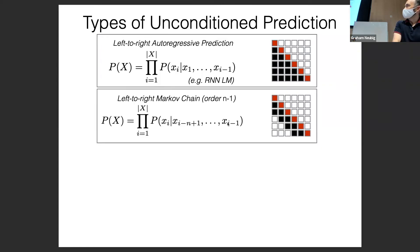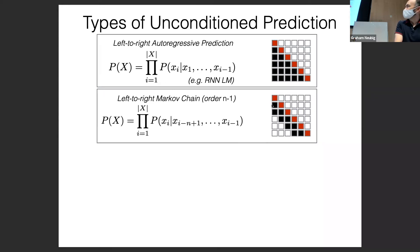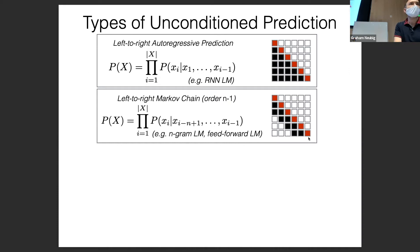Another type is a left-to-right Markov chain, where you condition on previous context but only on some of it — not all of it. For example, conditioning on the two previous words. A good example of this is an N-gram language model, and also the feed-forward neural network language model, which is a variety of N-gram language model.